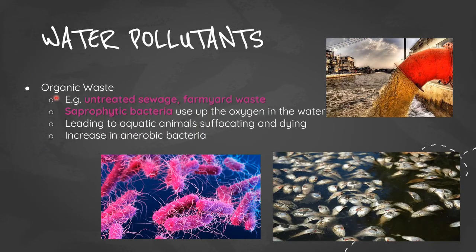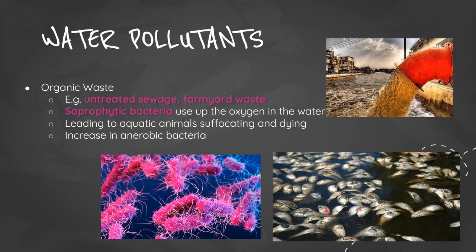Water pollutants are substances found in water that harmfully affect the environment. Organic waste — such as untreated sewage and farmyard waste — introduces saprophytic bacteria, which feed on the waste and use up oxygen in the water. This leads to aquatic animals suffocating and dying, and causes an increase in anaerobic bacteria, which do not need oxygen to survive.